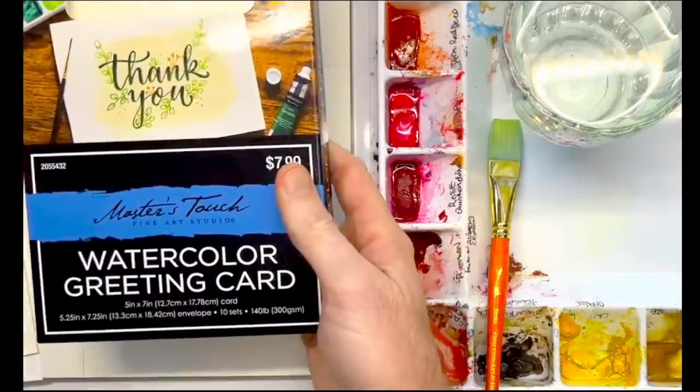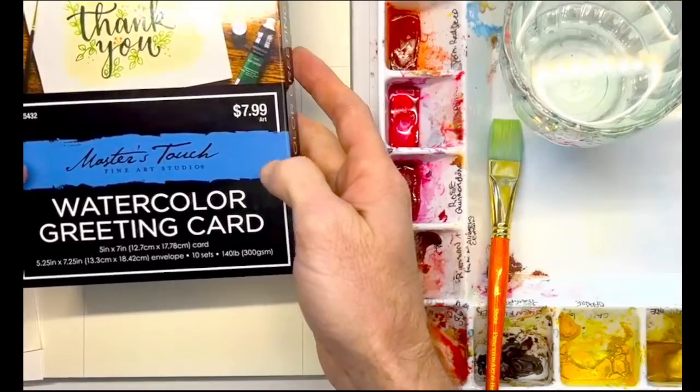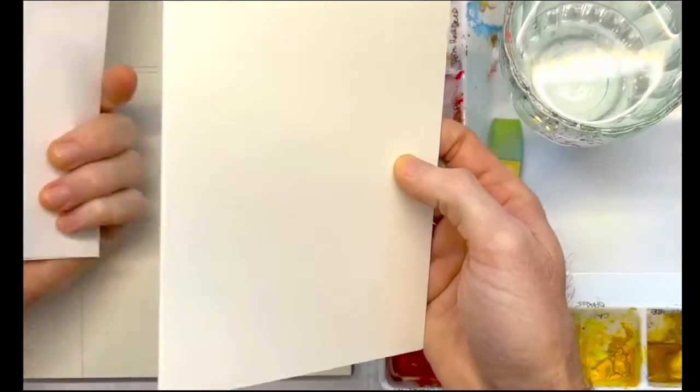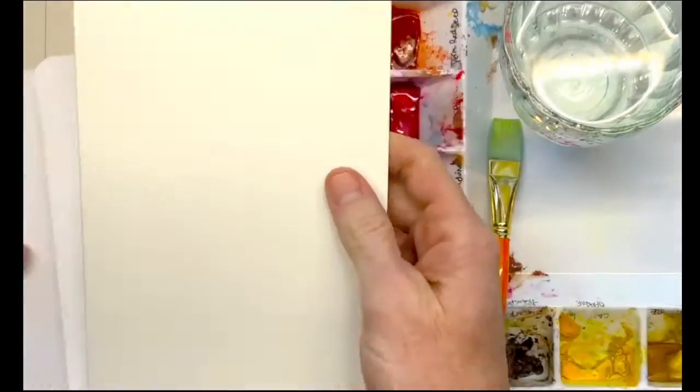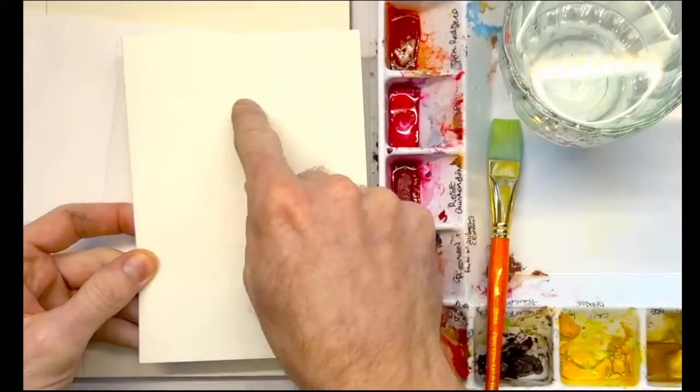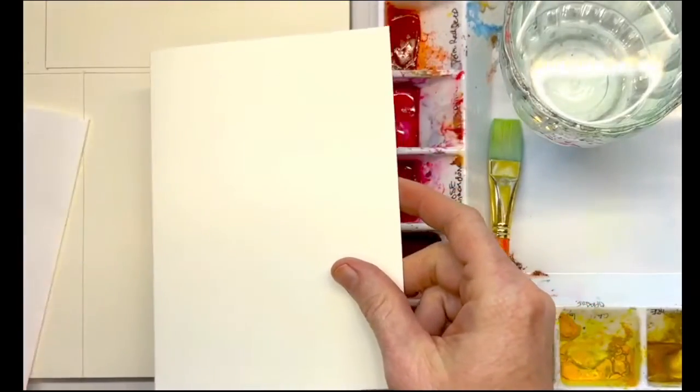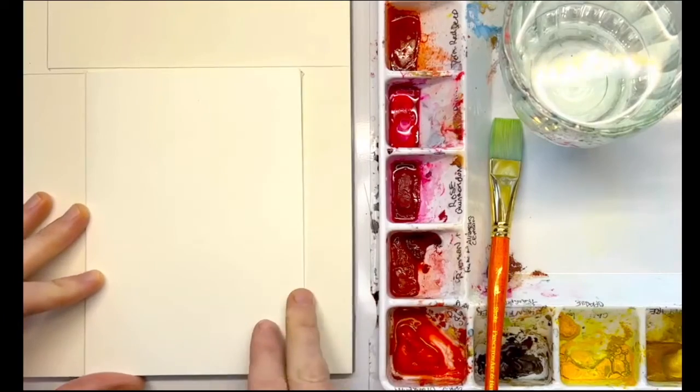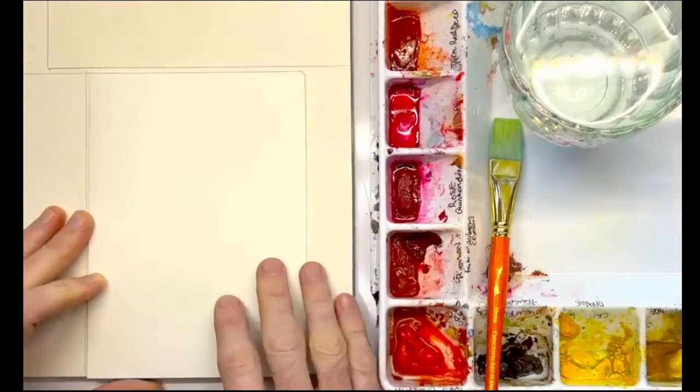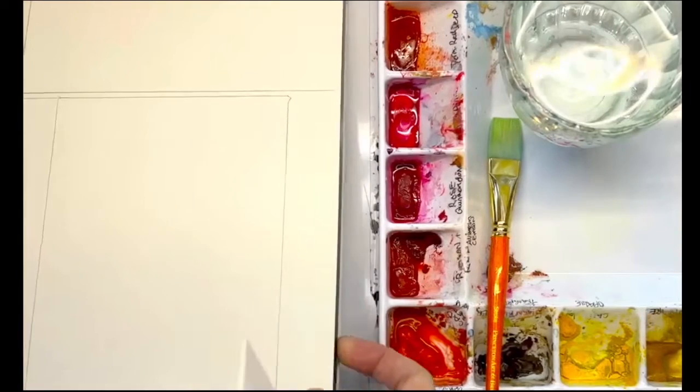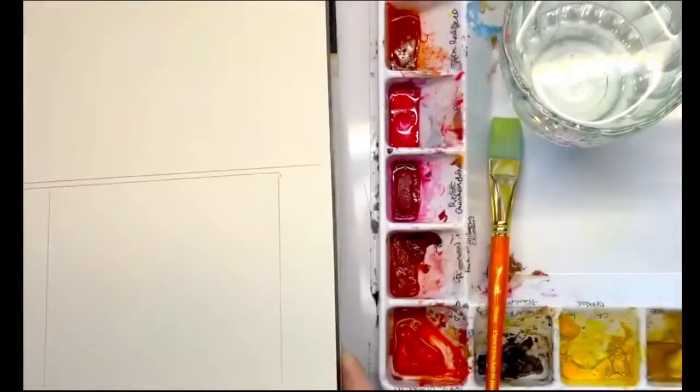Our supplies for today are these Masters Touch Fine Art Studio watercolor greeting cards. They are 5x7. So you get an envelope here and it folds out. You can paint directly on top of this surface or if you want to insert a watercolor, you can just trace this on any watercolor paper that you have. So that's what I've done on this Saunders Waterford watercolor paper. This is a 12x16 block and I was able to get 5 prints out of this.